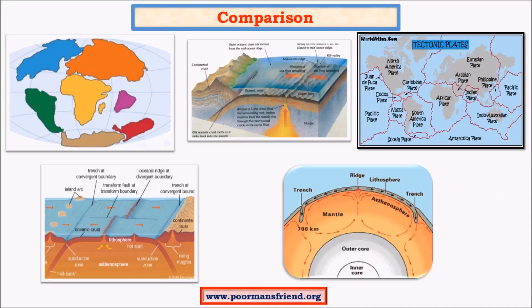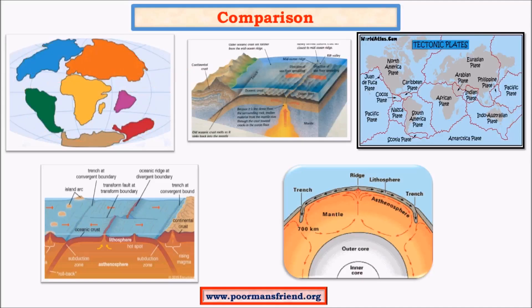The first theory we studied is continental drift theory, which was suggested by Alfred Wegener in the 1920s. According to his theory, there was a huge continent called Pangaea, surrounded by a huge ocean called Panthalassa. The northern part of the continent was called Laurasia whereas the southern part was called Gondwana land. The drift started about 200 million years ago and is still continuing.